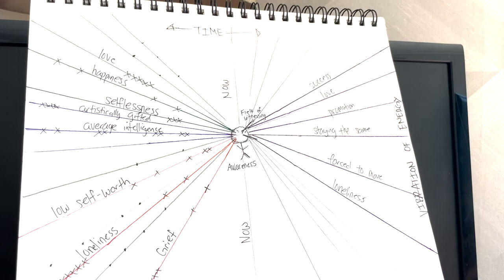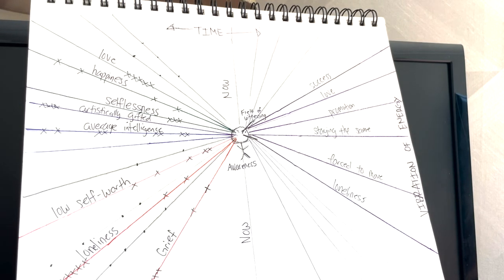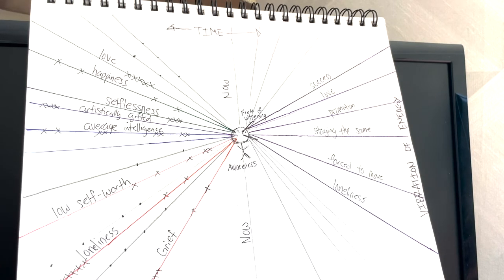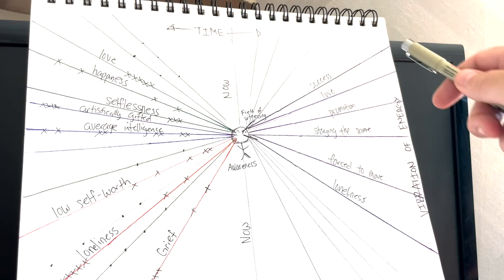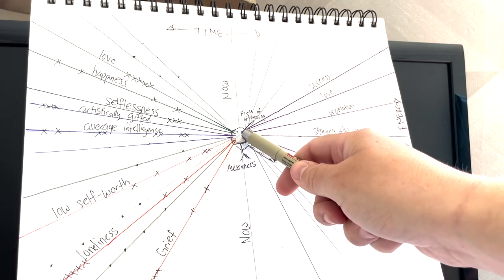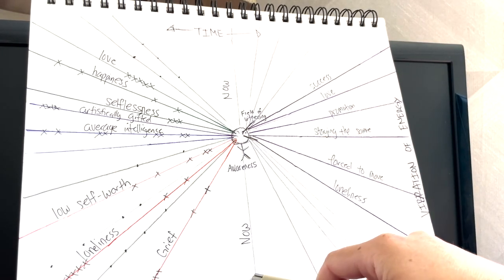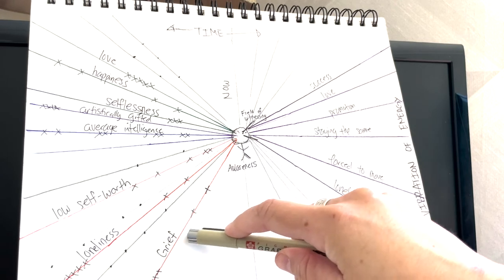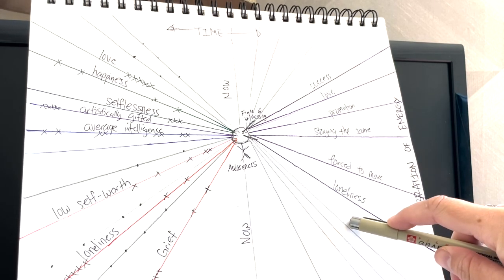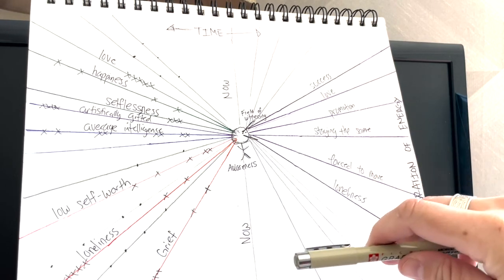That means getting really specific about what success means. Does that mean owning a house, for example? And if so, like, where is that house? What does it look like? What materials are made of it? What environment is it in? Where is it located? Who are you living with? These are specific things. And the more specific we get, the more that we call in this line to us in the moment of now.